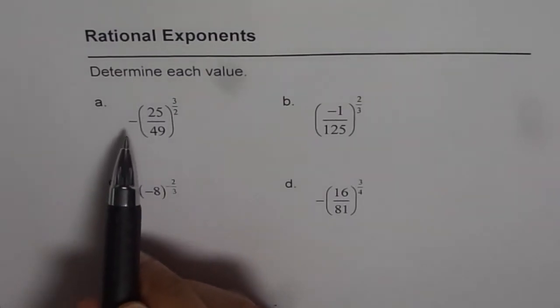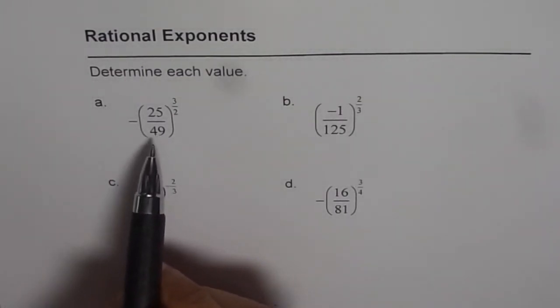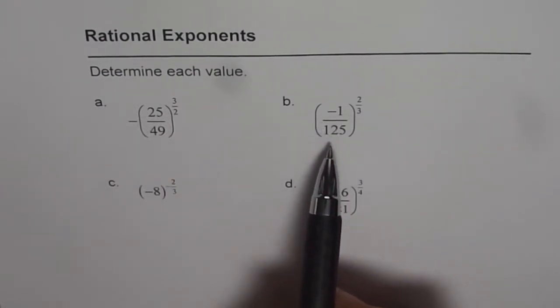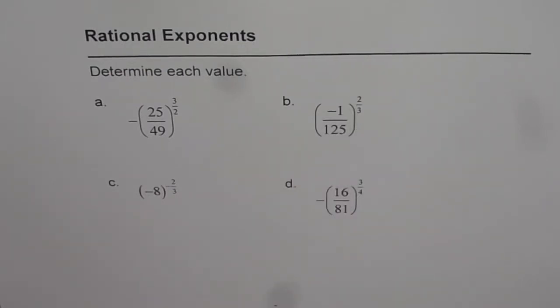The first one is negative of (25/49) to the power of 3 over 2. Then we have (-1/125) to the power of 2 over 3. Part C is (-8) to the power of negative 2 over 3. And D is negative of (16/81) to the exponent of 3 over 4.